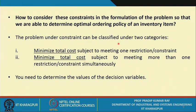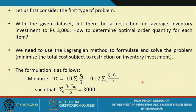If such restrictions or constraints exist, the question is how to consider them in the problem formulation to determine an optimal ordering policy. Problems under constraints can be classified into two categories: first, minimize total cost subject to one restriction; second, minimize total cost subject to more than one restriction simultaneously. With the given data set, let there be a restriction on average inventory investment to 3000.